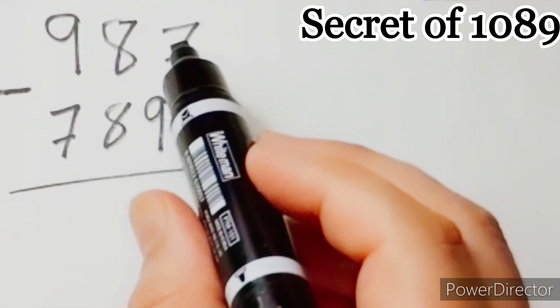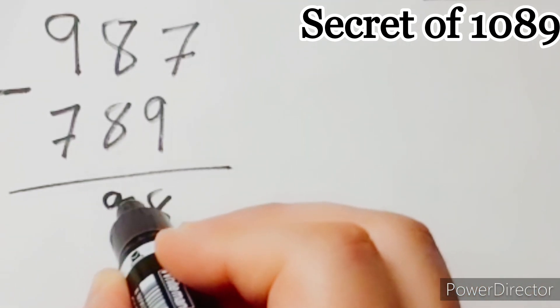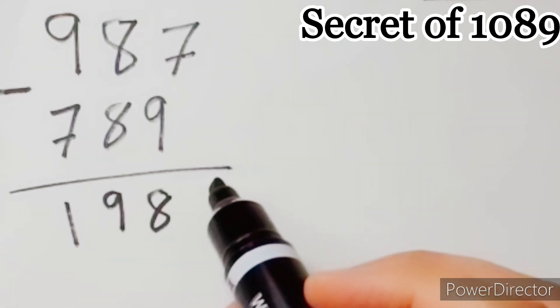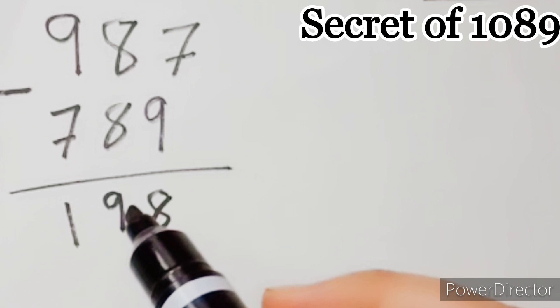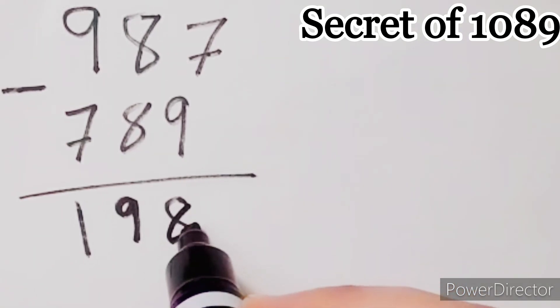7 minus 9 can be 17 minus 9 equals 8, 9, 1. So, the difference between the two numbers is 198.